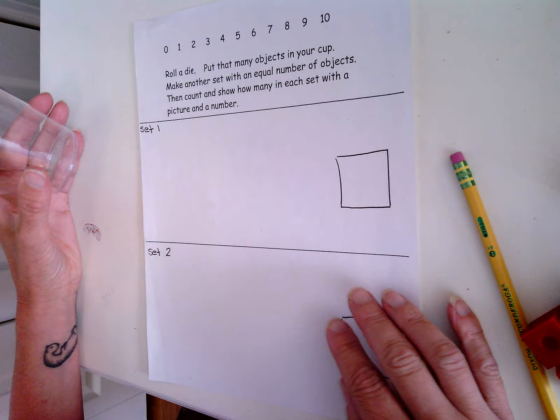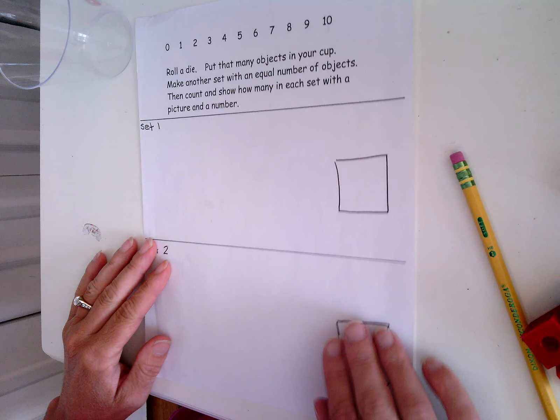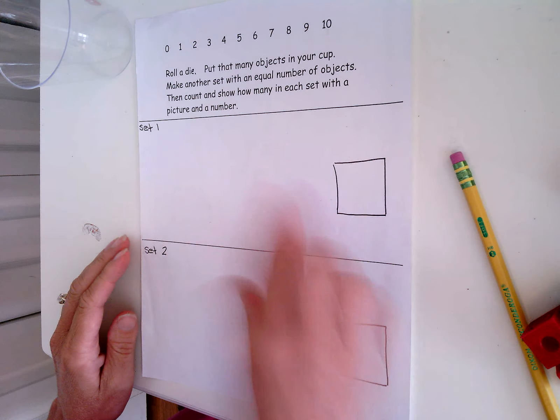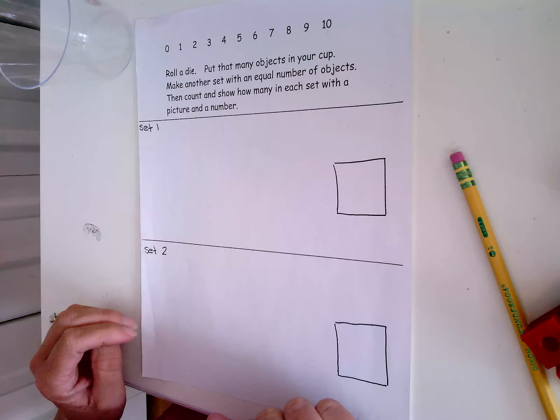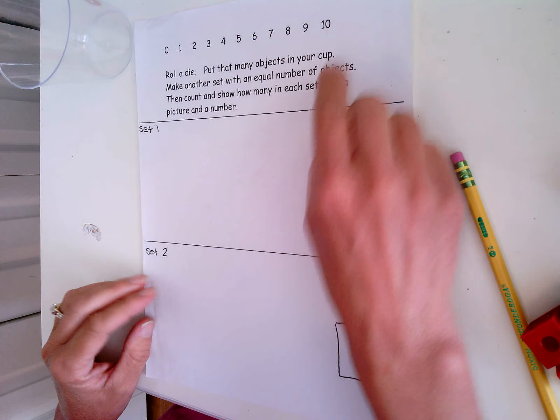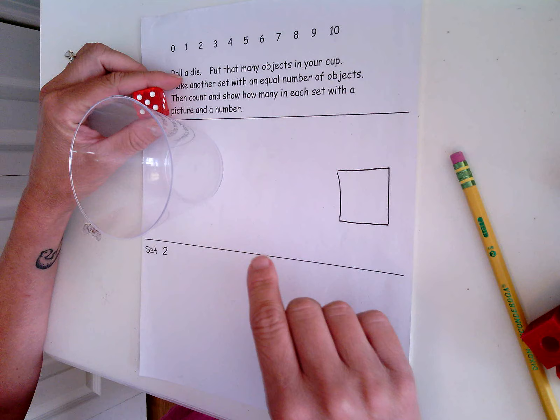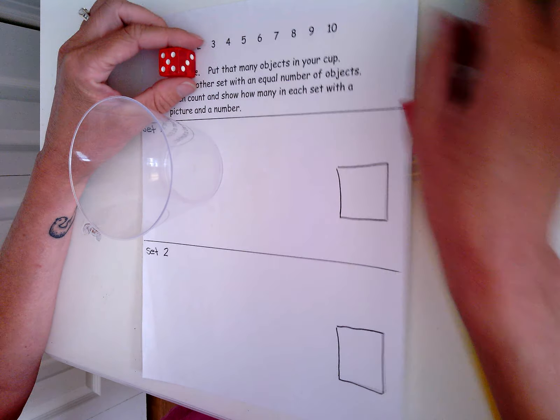So today the journal prompt is just like the one that we did last time, except Mrs. Stalkup drew a little bit for you to make our pictures a little easier. You need journal page 12, you'll need a cup, a die, and some counters. I'm going to use my Lincoln cubes, and then you'll need things to write with, a pencil, maybe a crayon.